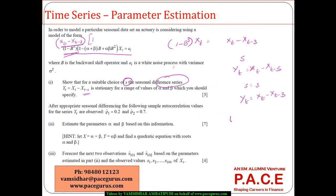The characteristic equation becomes 1 minus (alpha + beta)z plus alpha*beta times z squared. For this kind of characteristic equation, the roots are alpha and beta — this is the sum of the roots, and this is the product of the roots.